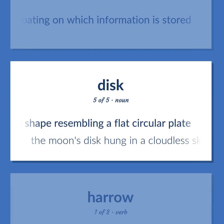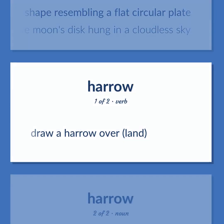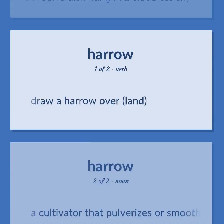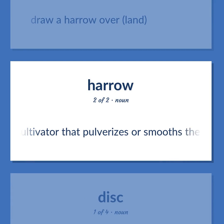Example: The moon's disc hung in a cloudless sky. Also, to draw a harrow over land; a cultivator that pulverizes or smooths the soil.